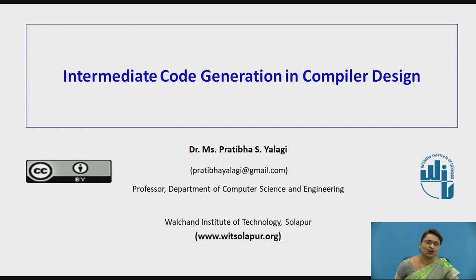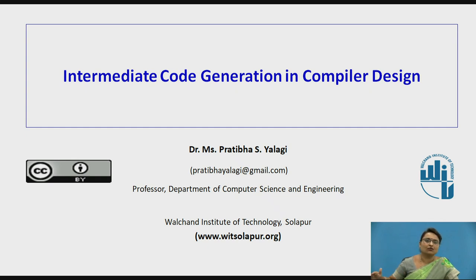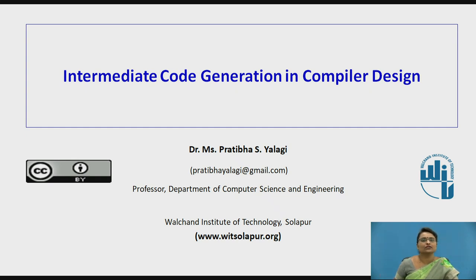Hello everyone, welcome to the session on intermediate code generation in compiler design. Now what is this intermediate code generation? As we know, the compiler has many phases and every phase has a given task to perform. When a source program is given to the compiler it will convert that into a target program, and during this conversion the source program passes through many phases. Let us see how intermediate code generation works in compiler design.